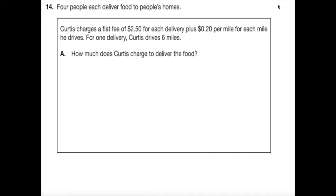Four people each deliver food to people's homes. Curtis, one of them, charges a flat fee of $2.50 for each delivery plus $0.20 per mile. For one delivery, Curtis drives six miles. You're going to find a lot of problems like this in algebra where there's a starting value or a flat fee or a one-time price and then another value that gets repeated.